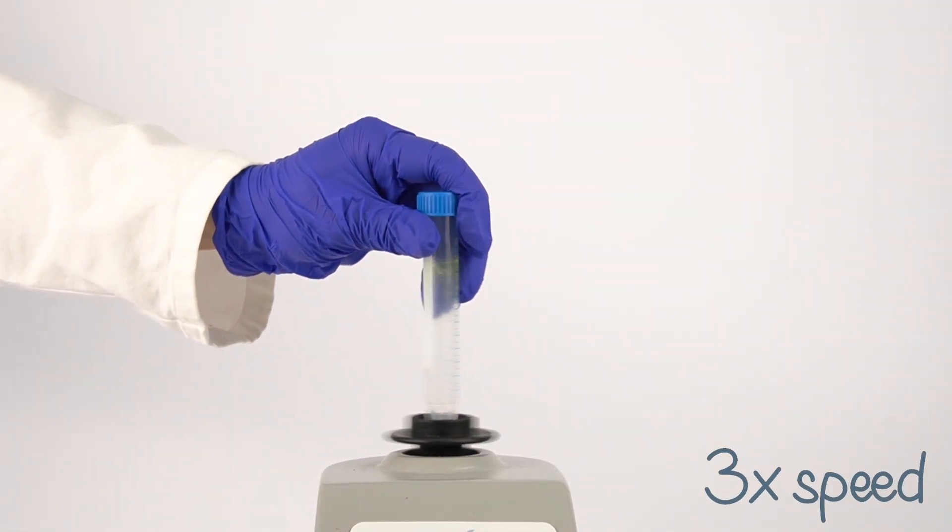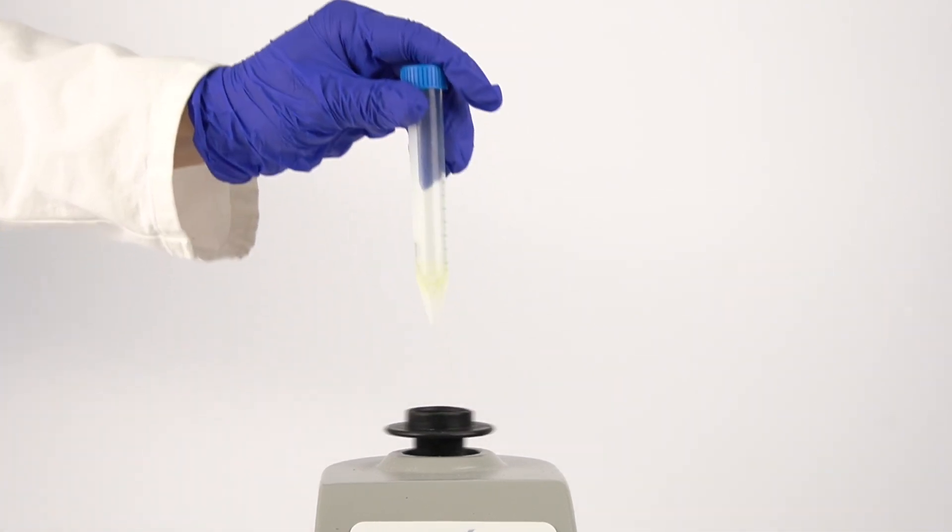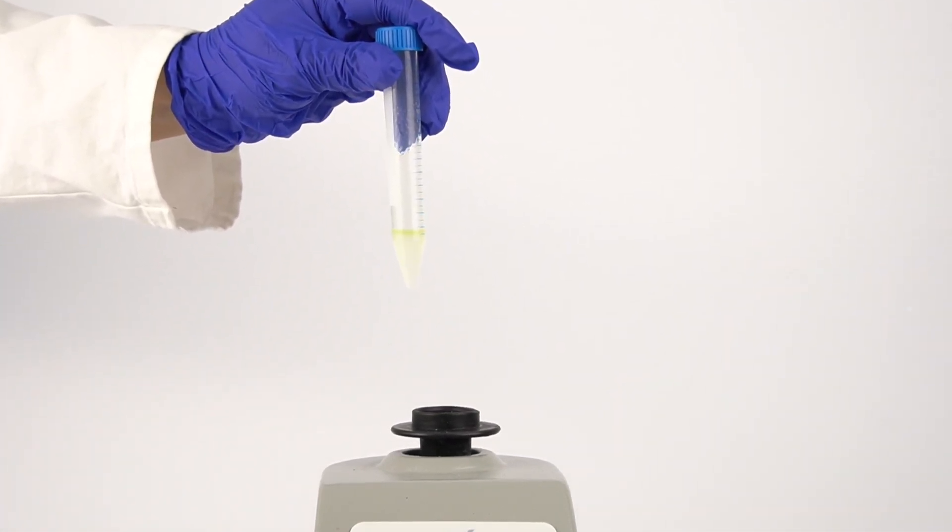The size of the emulsion droplets can be controlled through the diameter of the vial and vortexing speed. Bigger vials and higher speeds make smaller droplets.